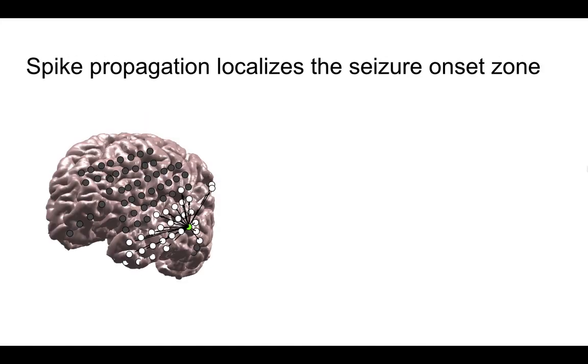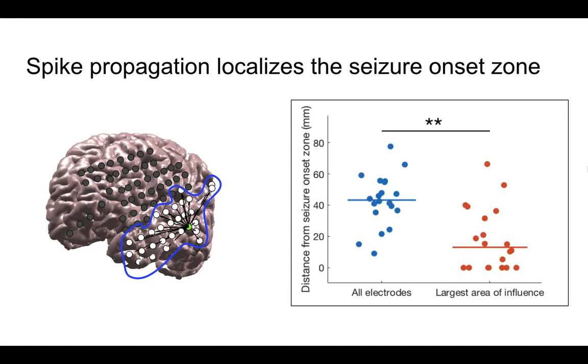For each electrode, we calculated the area over which spike sequences that start in that electrode tend to propagate. We found that the electrodes with the broadest area of spike propagation were also closer to the seizure onset zone than predicted by chance, about two centimeters away.